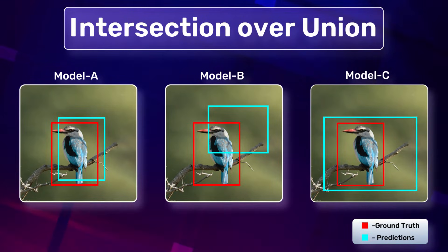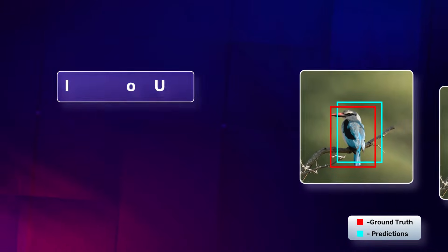In Model C, we can observe that the localization of prediction is even higher, where even the branch of the tree is included. Here's an introduction to IoU.